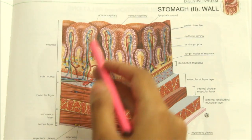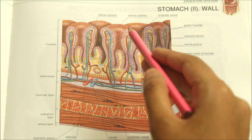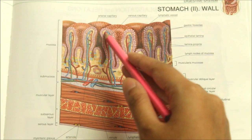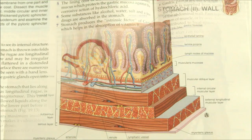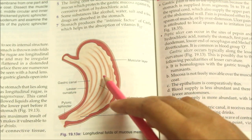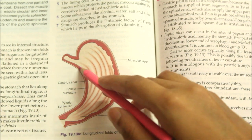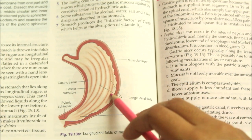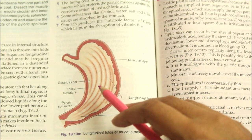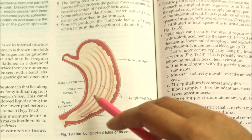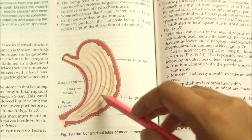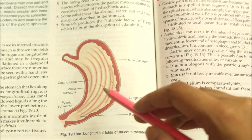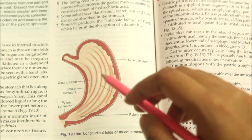The mucosa of an empty stomach has folds termed gastric rugae. The rugae are longitudinal along the lesser curvature and irregular elsewhere. On the mucosal surface there are numerous small depressions called gastric pits, into which the gastric glands open.